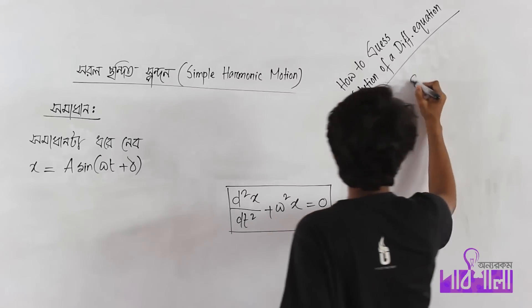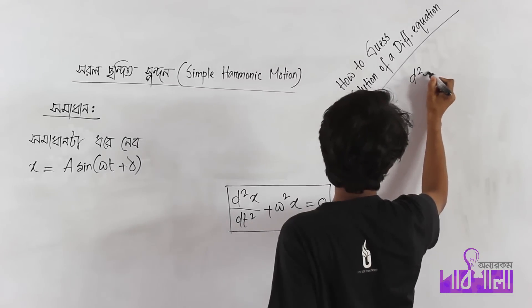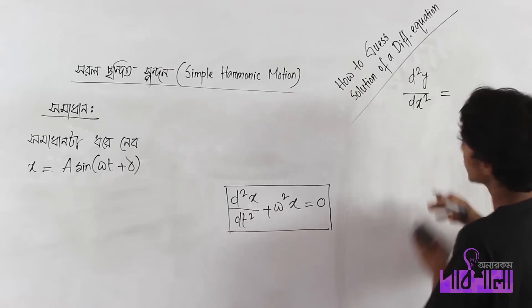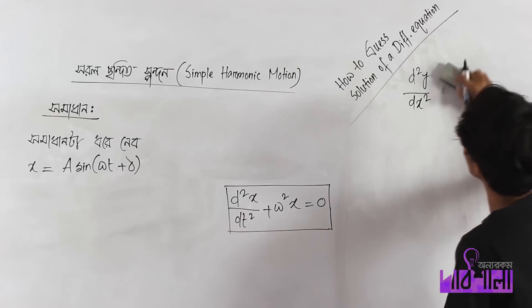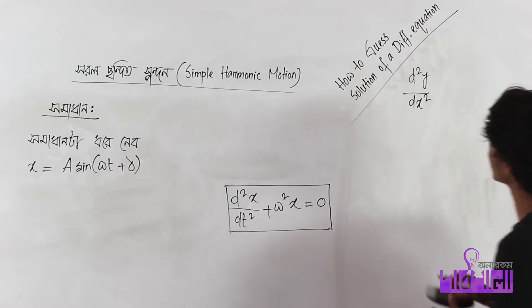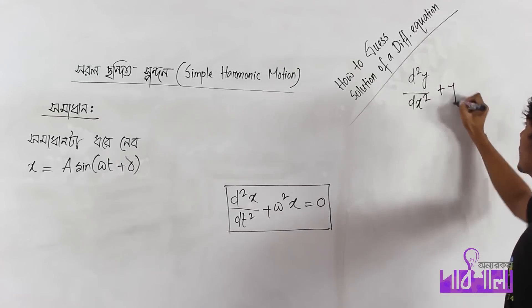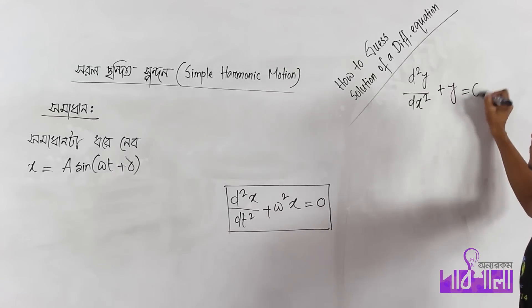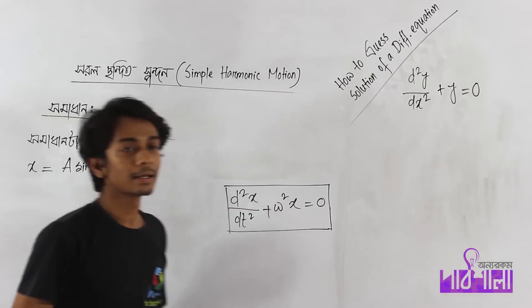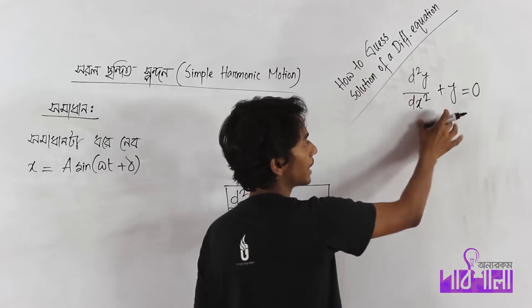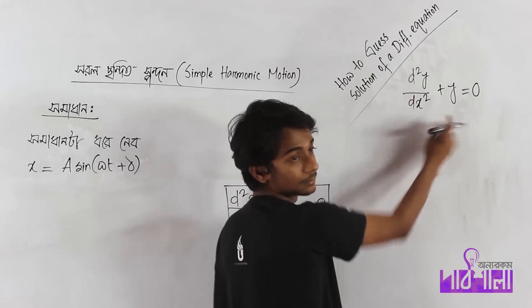Here we have dy/dx, d²y/dx² sum. Let's see — we have to show you that this is d²y/dx² plus y equals 0.